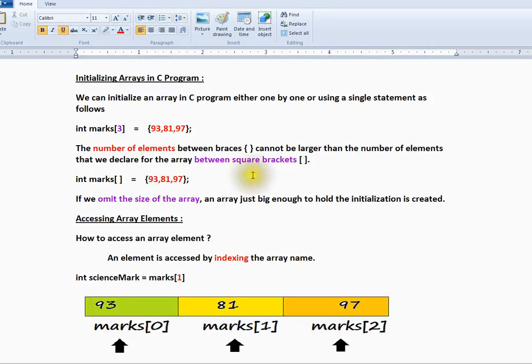We can initialize an array in C program either one by one or using a single statement as follows. You can initialize an array like this. The number of elements within the braces and the number you specify within the square bracket should be equal. It cannot be larger than the number of elements.